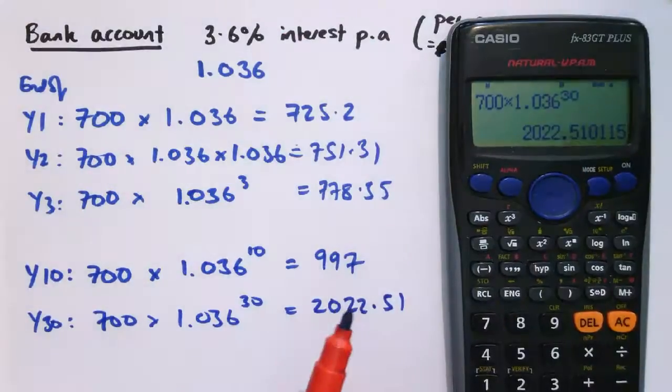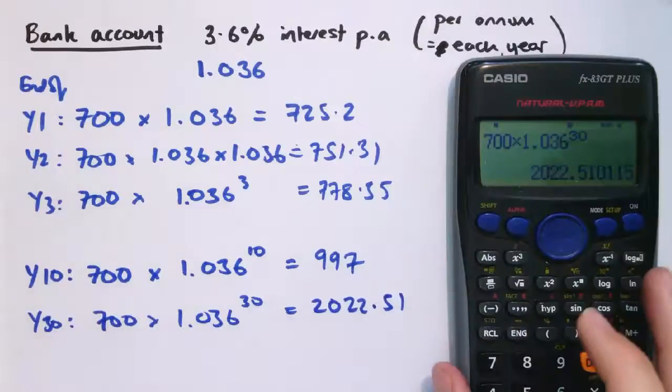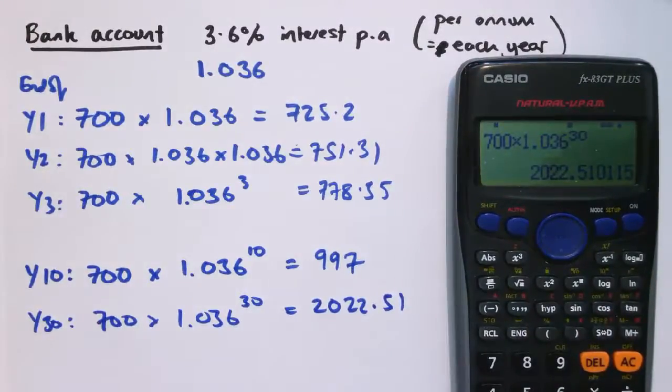Now in reality, maybe the interest rate would change from year to year, but lots of products like that would give you a fixed rate from year to year. So very neat, and now hopefully you're starting to see why this scale factor 1.036 is so much better than just working out 3.6% and adding it on and doing that again and again, because that sort of argument would just take you so long to work out a problem like this, and it's really easy with this scale factor method.